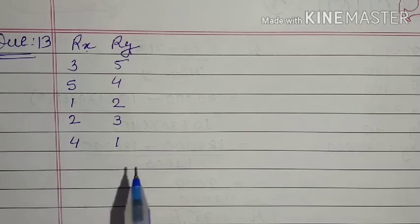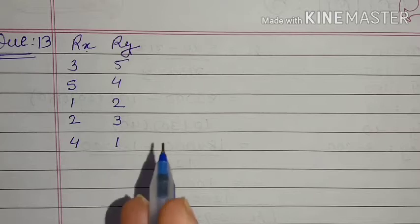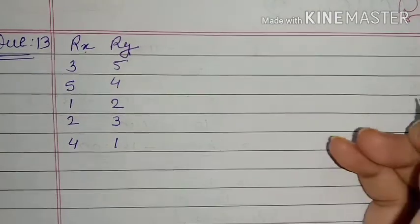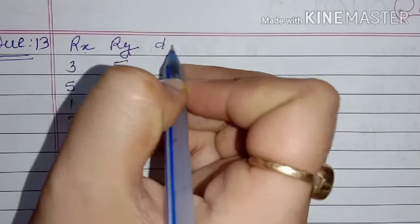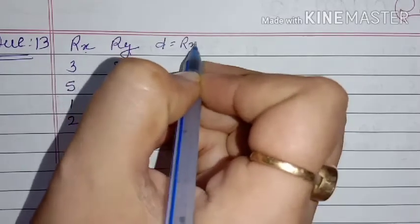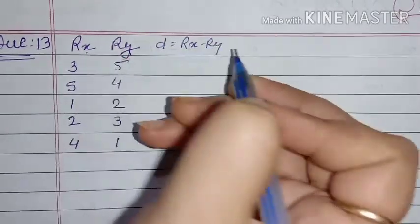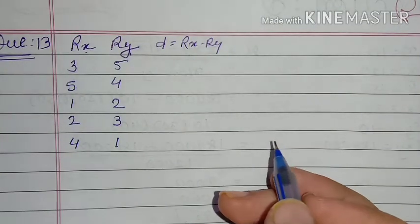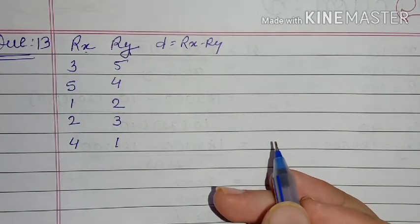Which formula? The rank correlation method. This is why we have to do d, where d = Rx minus Ry. So now Rx minus Ry, we will do. What will we get here?